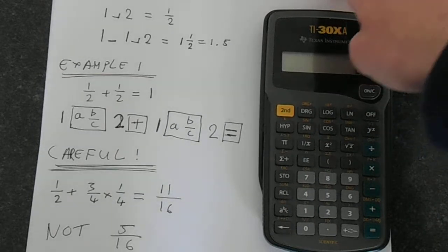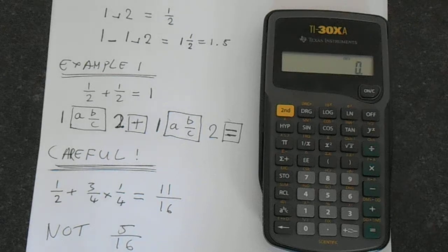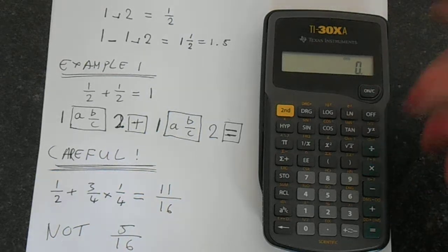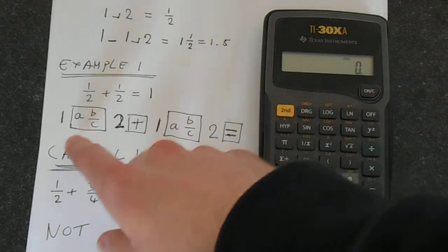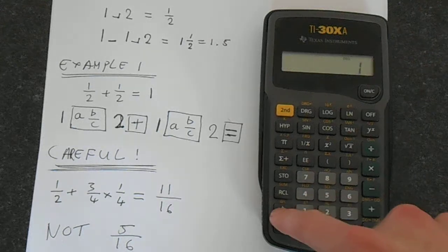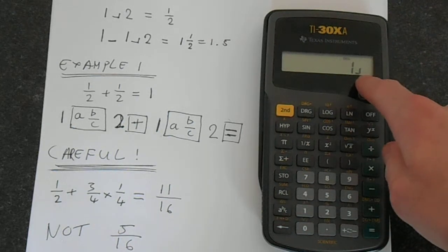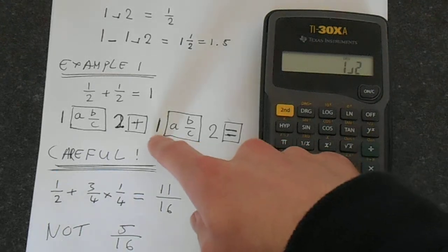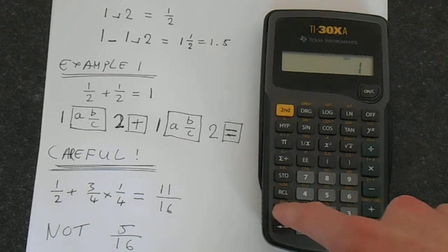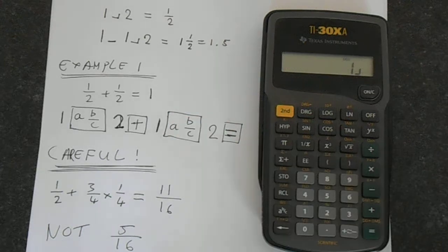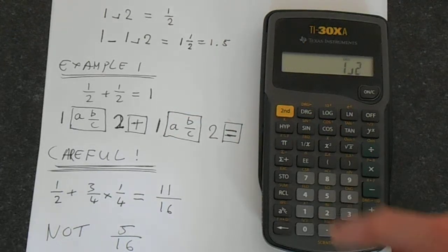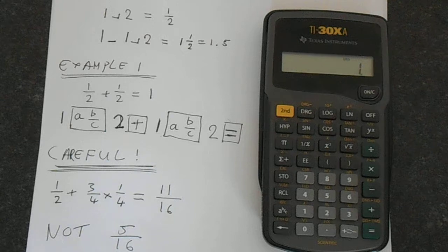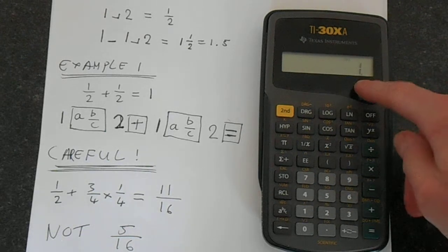Let's just add two fractions. We'll do 1 half plus 1 half because everybody knows that is of course 1. So we're doing 1, the a b over c button gives us that symbol, then 2, then plus, and then we enter 1, a b over c button, and then 2, and press equals, and there we get the number 1 as expected.